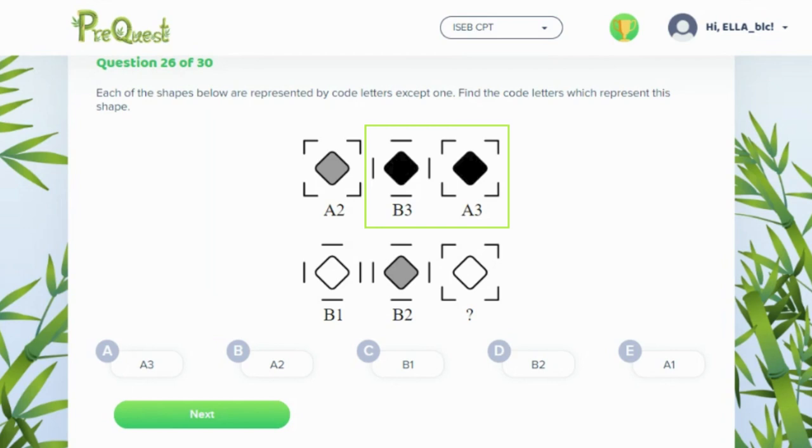For example, here you can see that both of these two shapes have a 3. Both of these shapes are also black.